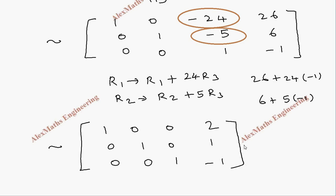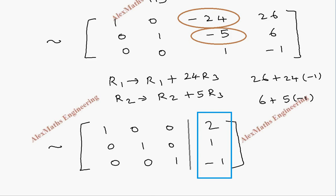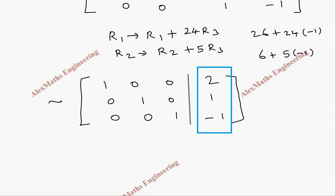We have obtained the augmented matrix in diagonal (reduced row echelon) form. From this we directly read off the solution: x1 = 2, x2 = 1, and x3 = -1.